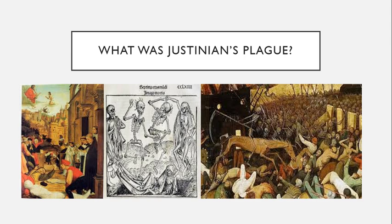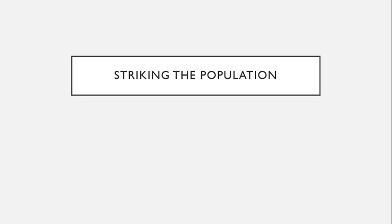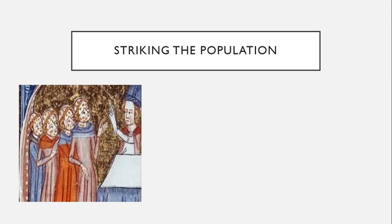Following the established trade routes of the empire, the disease erupted in Ethiopia, Egypt, and Constantinople. In the capital city of the empire, Constantinople, 5,000 people died each day at the height of the plague. Even Justinian caught the disease, but unlike many of his subjects, he survived.